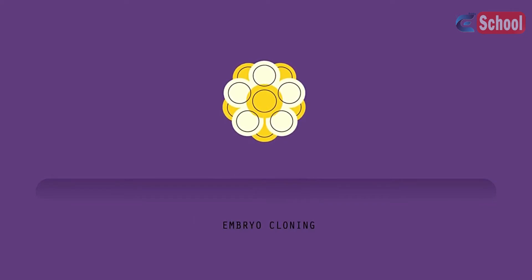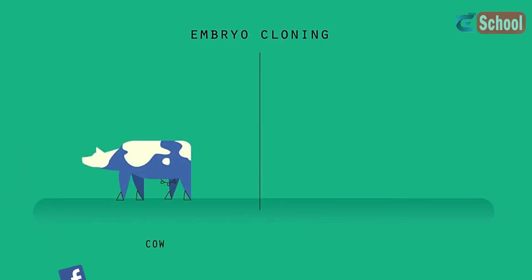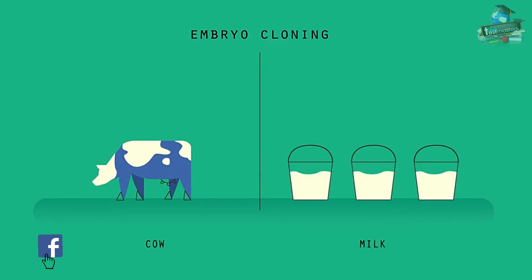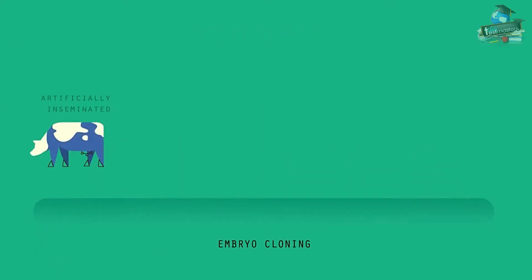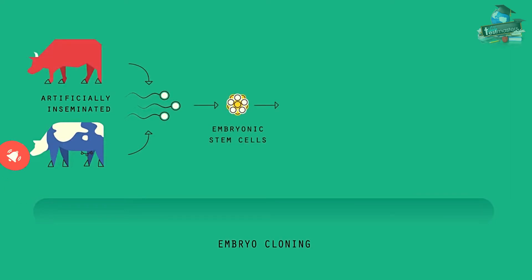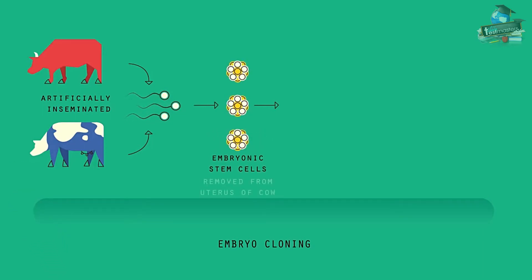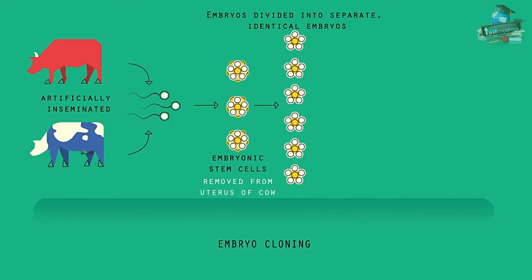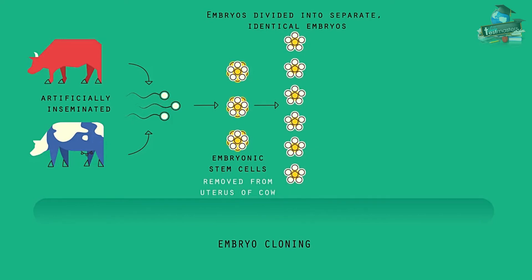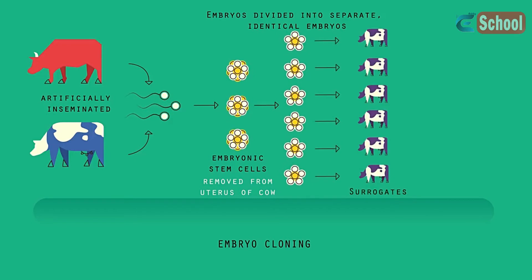The first is called embryo cloning. A farmer might have a cow that gives a lot of milk and wants to use her to create many calves. The cow is artificially inseminated using the sperm of a bull. The embryos grow until they form a ball of embryonic stem cells. Before they become specialized, the embryos are removed from the uterus, divided up into separate embryos which will all have the same DNA, and then each is placed into the womb of a different cow.